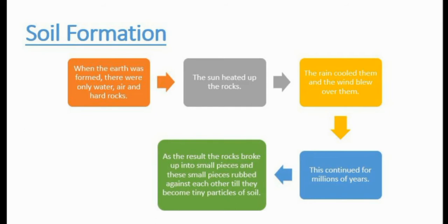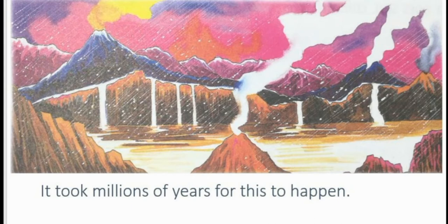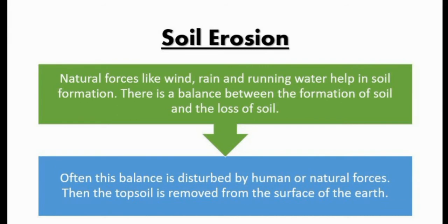Now we will see how soil was formed. When the earth was formed, there were only water, air, and hard rocks — there was no soil. Then the Sun heated up these rocks, the rain cooled them, and the wind blew over them. This continued for millions of years. As a result, the rocks broke up into small pieces and these pieces rubbed against each other until they became tiny particles of soil.